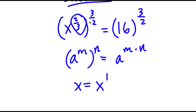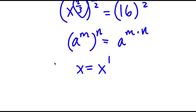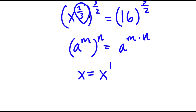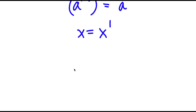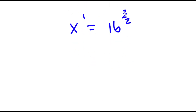So raising x^(2/3) to the power of 3/2 gives x to the power of 2/3 times 3/2, which simplifies to x to the power of 1, which is just x. This equals 16 to the power of 3 over 2. So x equals 16 to the power of 3 over 2, and we need to simplify this.